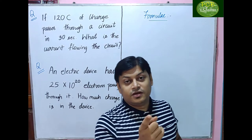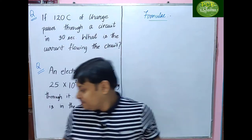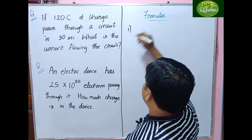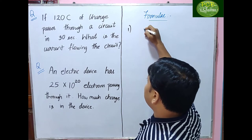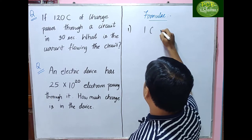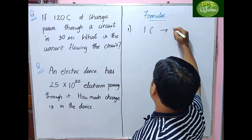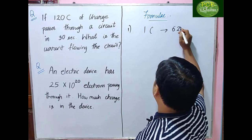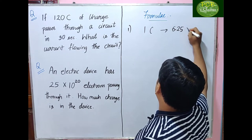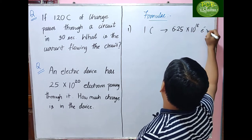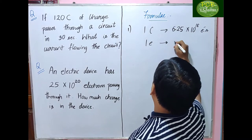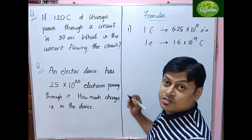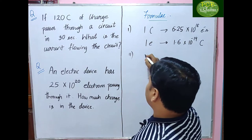The first formula we covered in lecture one is about charge. One Coulomb equals 6.25 × 10¹⁸ electrons, or one electron gives 1.6 × 10⁻¹⁹ Coulombs.